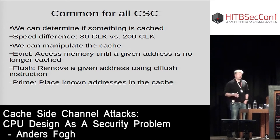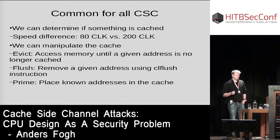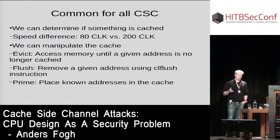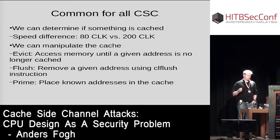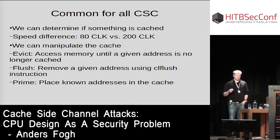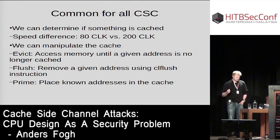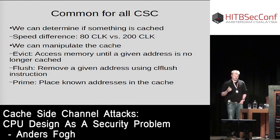Common to all cache side-channel attacks is that we can determine if something is in the cache. If we access a cached address it will be much faster — typically around 80 clock cycles — while accessing uncached memory going to main memory costs around 200 clock cycles. We can also manipulate the cache in one of three ways: eviction (accessing memory in a cache set until previously cached data is replaced), flush (using the unprivileged CLFLUSH instruction to evict individual cache lines), and prime (accessing memory in a pattern so the attacker knows which addresses are in the cache at a given point in time).